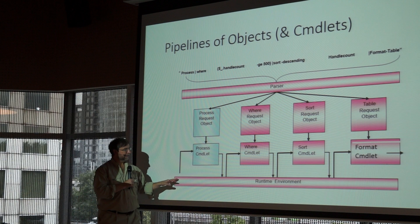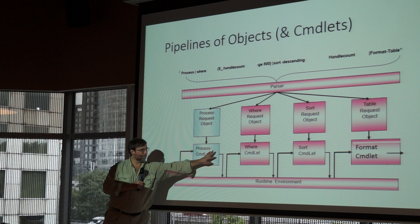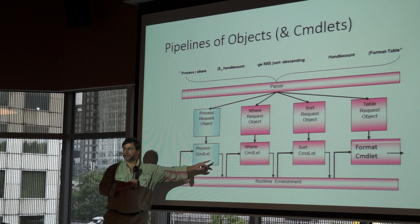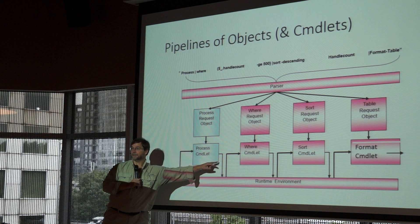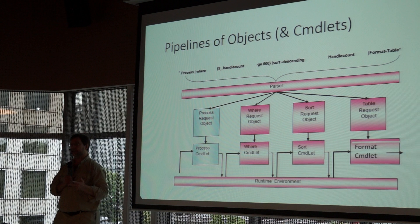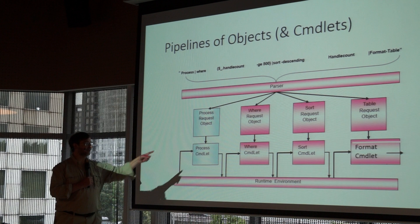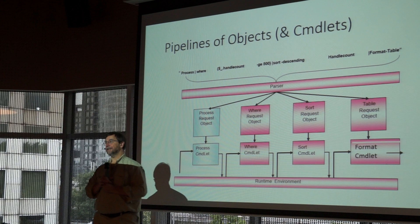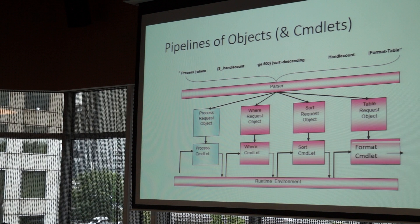When you type a command, we create this graph, and the runtime gives control to the process commandlet. It runs until output is ready. Then it doesn't go directly to the where commandlet — instead it goes to the runtime. The runtime looks at the where commandlet and asks: what's your data contract? What do you need and what do I have? Then it does whatever coercion, casting, shredding, enumeration, unfolding — whatever manipulation is required to meet the data contract of the downstream commandlet. It does it again and again. That's why you get some of the magic in PowerShell.